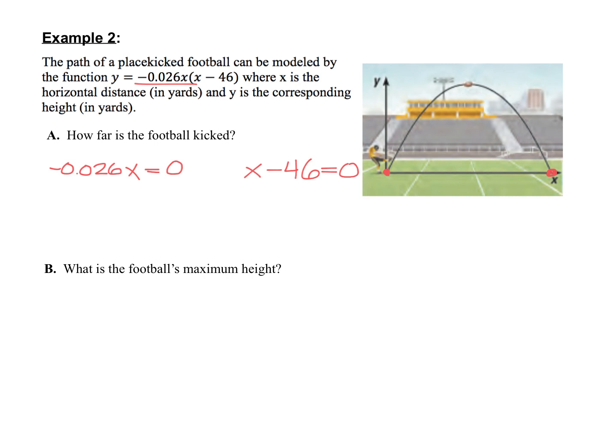Now technically here, the negative 0.026 is my a-value, and my factor is really just like an x. It just doesn't have a number with it because it's x minus 0. But when we solve for that first factor here, when I divide 0 by anything, I'm going to get a 0. So for the first x-intercept, we have x equals 0. For the second x-intercept, if we add 46 on each side, we get x equals 46. So now the distance between those two, 0 yards and 46 yards, would be 46 yards. So the football was kicked 46 yards.